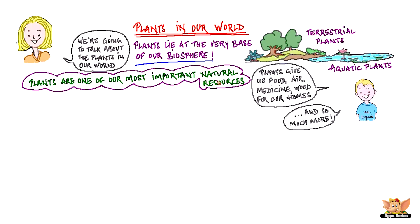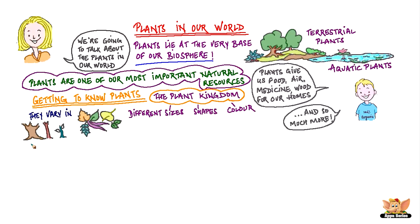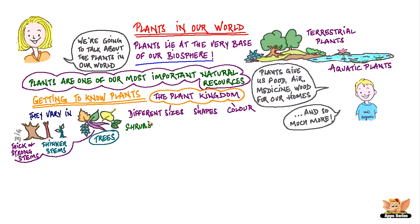Let's get to know plants. Just as we have so much variation in the animal kingdom, the plant kingdom has plants in different sizes, shapes, and colors. They vary in the shape and color of their leaves, and in the size and thickness of their stems. Some plants are big and have thick and strong stems, some have thinner stems and are not as tall, and others have very weak stems that cannot hold the plant up. Based on their different characteristics, plants can be divided into trees, shrubs, and herbs.